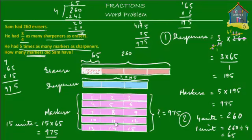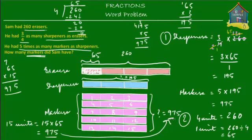And 15 units mean all these markers together, so all these markers together are 975 in number. That's the same answer as the first method — it doesn't matter which method you use, you still get to the same answer. So Sam had 975 markers.